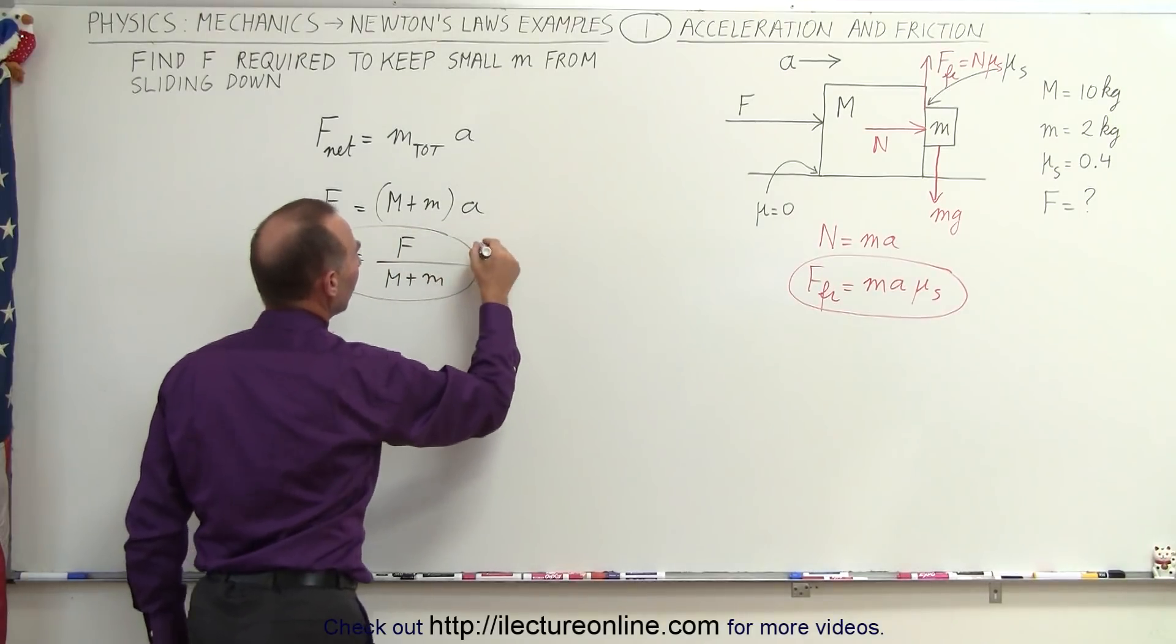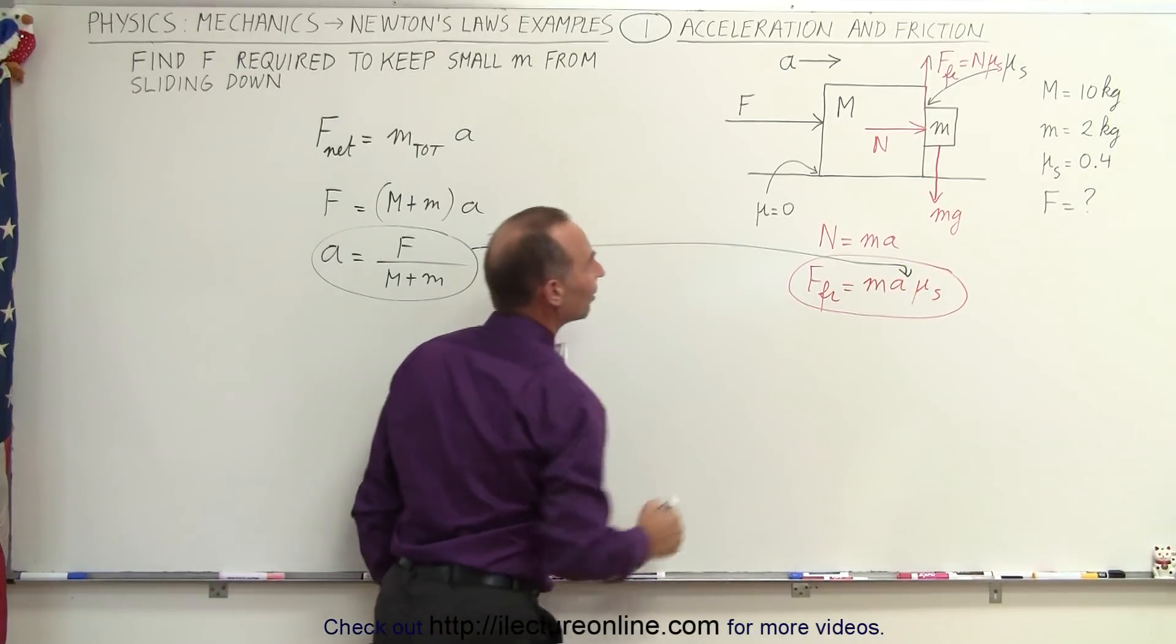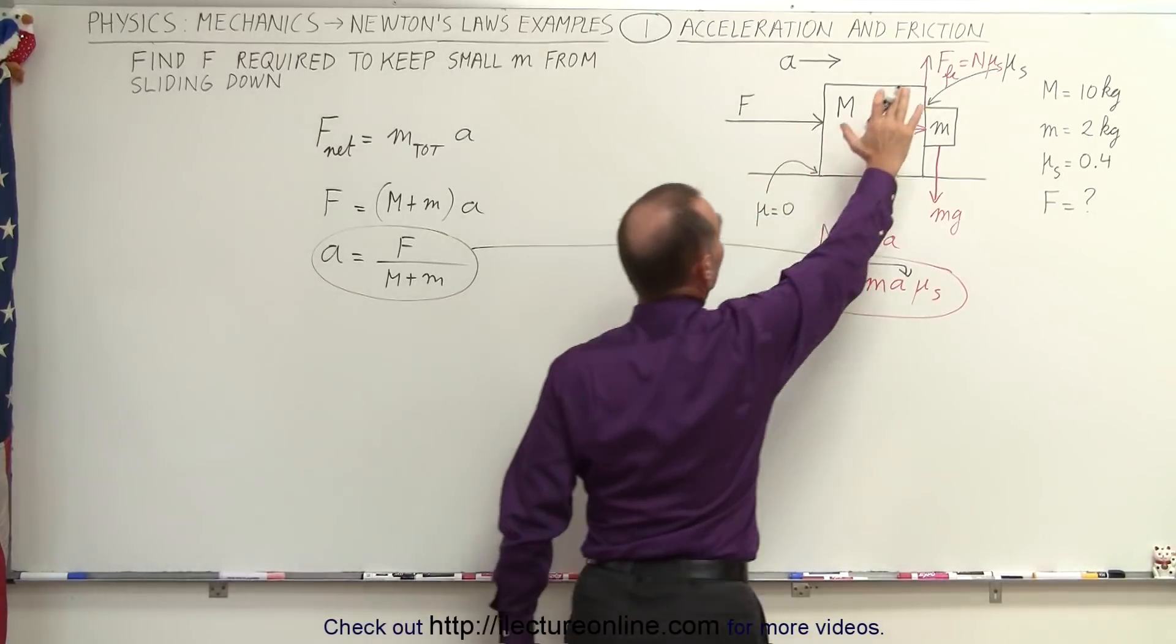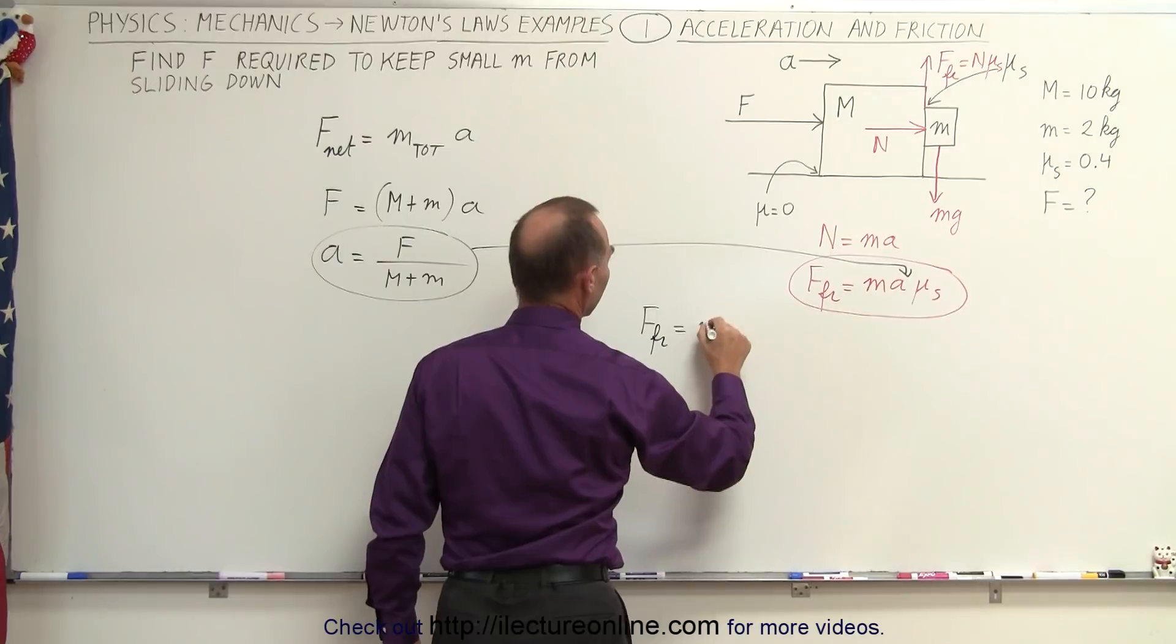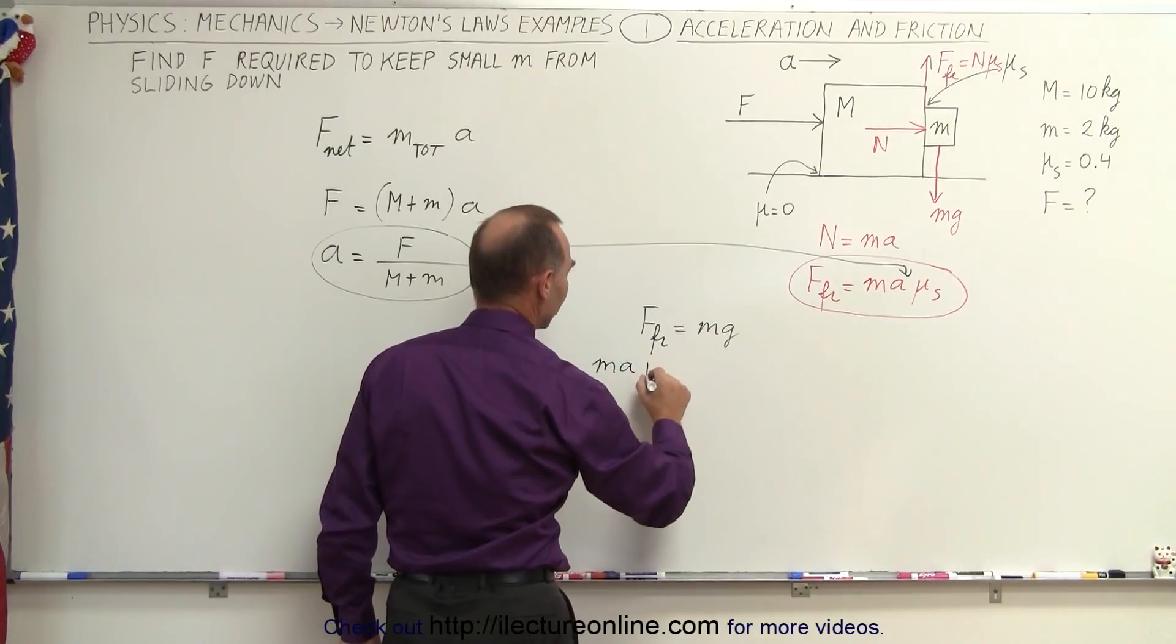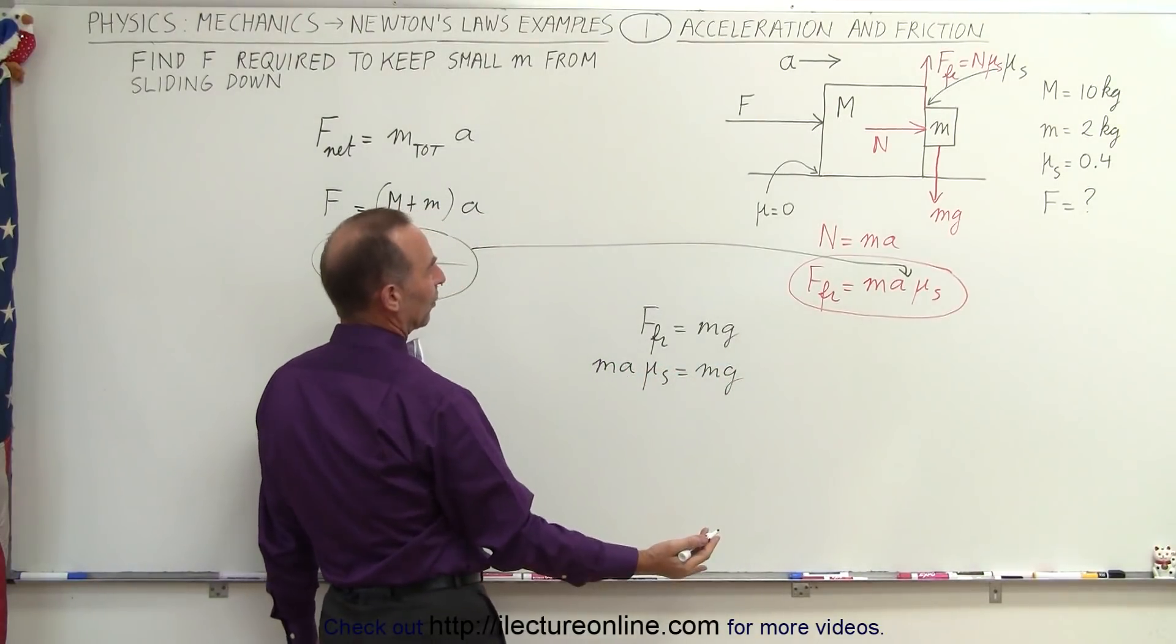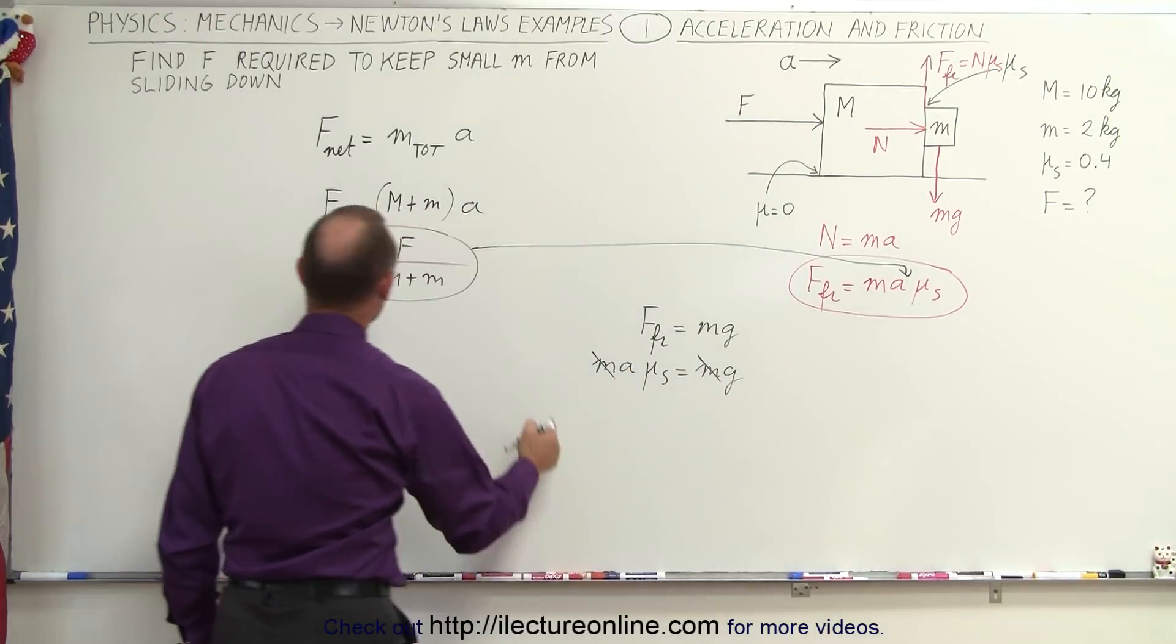Once we have this, we can plug that in here, in order to find the friction force. So now we realize that these two must be equal to each other. So we can say that the friction force is equal to the force due to gravity on the small block, and the friction force is ma times mu sub s equals mg. And notice right away that these two masses will cancel out.